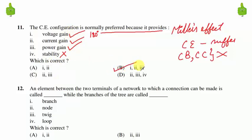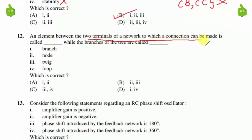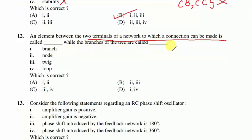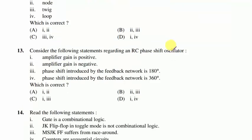Question 12: an element between two terminals of a network to which a connection can be made is called __ while branches of a tree are called __. I expect this answer in the comment section — please put your valuable comments.